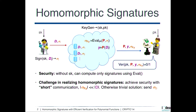The challenge in realizing amorphous signature schemes is that we want to achieve this security property, but at the same time we want short communication — the size of the amorphous signatures must be much shorter than the size of the original data set. Otherwise there is a trivial solution: you just send the signature on the input and the verifier does the computation and verification on their own.